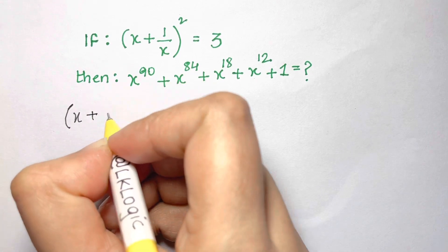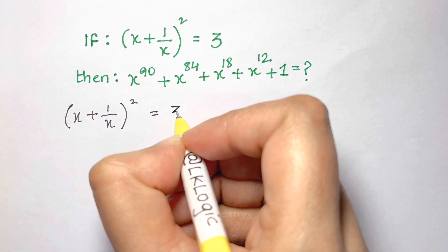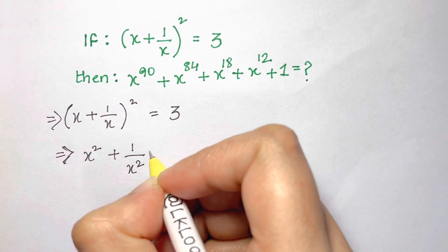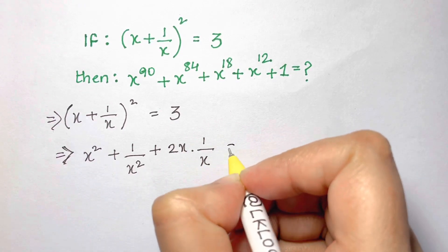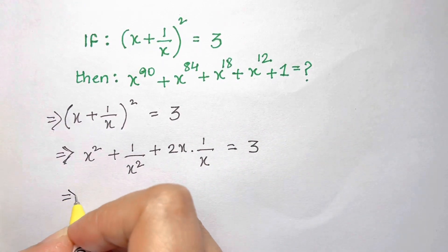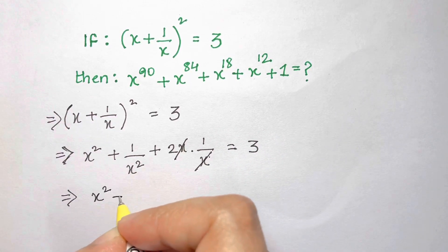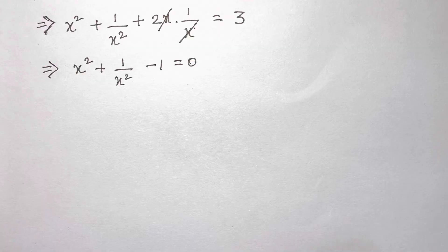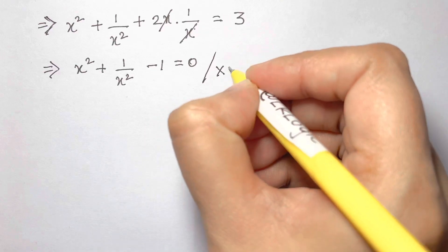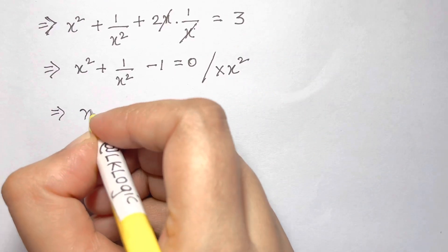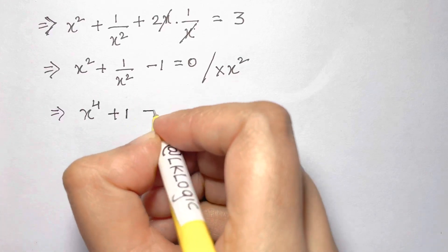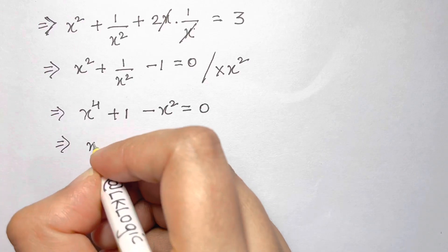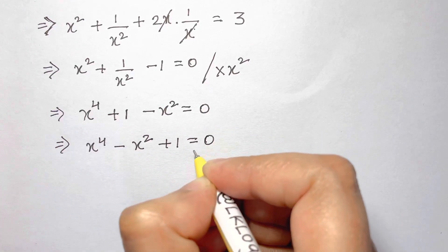We have been given that (x + 1/x)² = 3. Expanding this: x² + 1/x² + 2·x·(1/x) = 3. Cancelling x with x gives x² + 1/x² - 1 = 0. Multiplying through by x² yields x⁴ + 1 - x² = 0, or rearranged: x⁴ - x² + 1 = 0. Let this be equation 1.